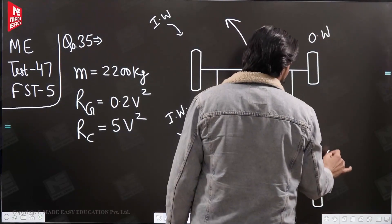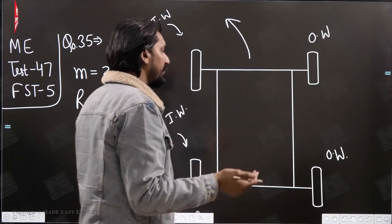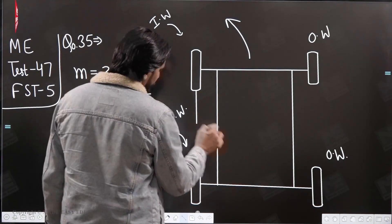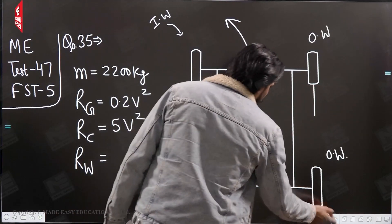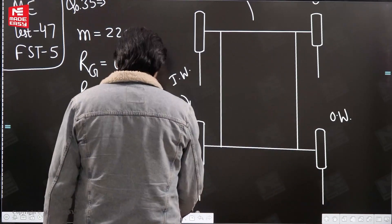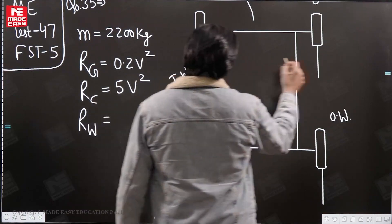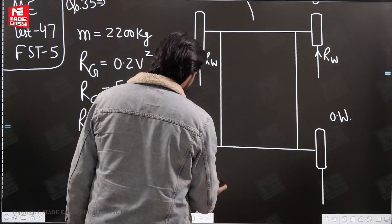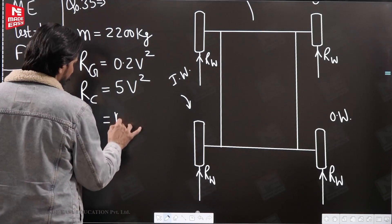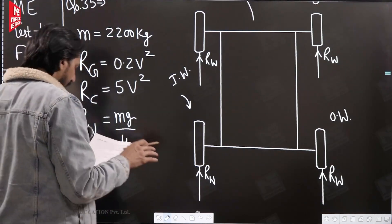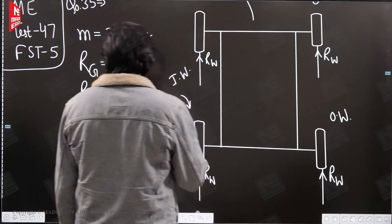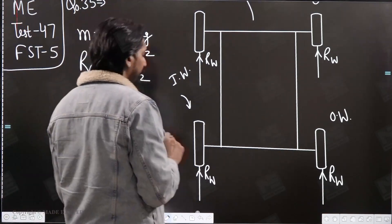On the wheels there are going to be three types of support reactions. One is because of weight — the vertical reaction will be in the vertical upward direction for all wheels. I'm taking that as Rw. Rw is simply the total weight of the vehicle divided by four, since it is distributed uniformly across all four wheels. Other than that, there are gyroscopic reactions and centrifugal effect reactions.